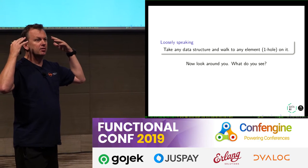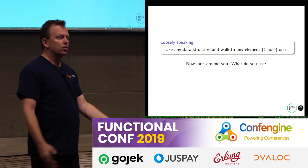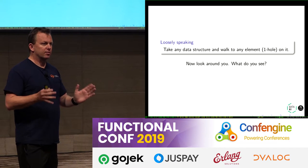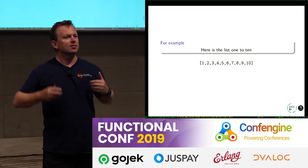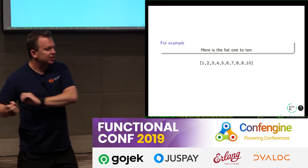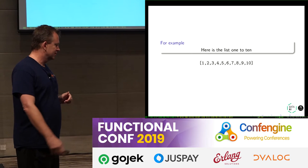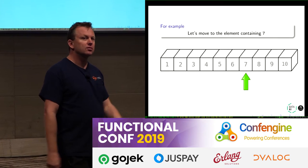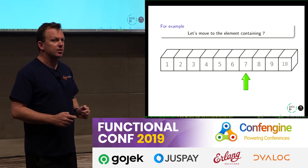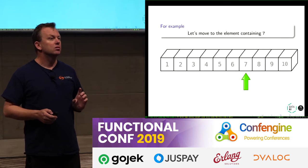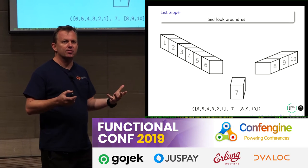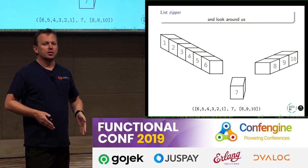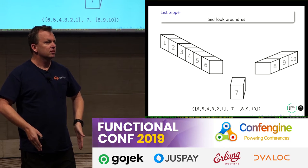Here's an informal way of thinking about a zipper. Take any data structure, just think of one and walk along it. Stand wherever you are and look around — what do you see? The things that you see is the zipper. I'll use a list as an example. Here's the list 1 to 10. I literally lay it out on the floor in front of me. What I'm going to do is walk to the element 7, stop, and look around. 7 is the hole — the element is the one-hole or the focus. I see 6, 5, 4, 3, 2, 1 to my left, and 8, 9, 10 to my right.